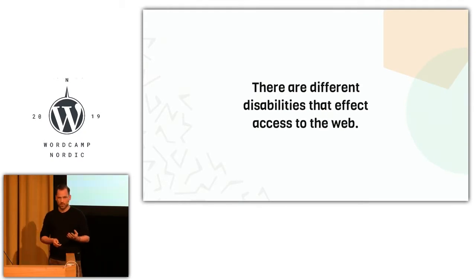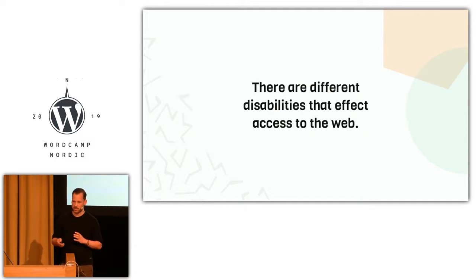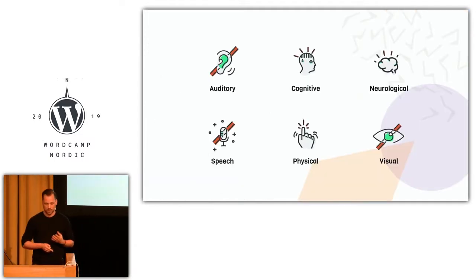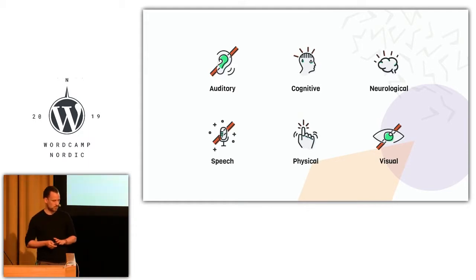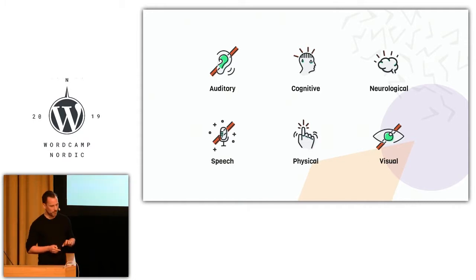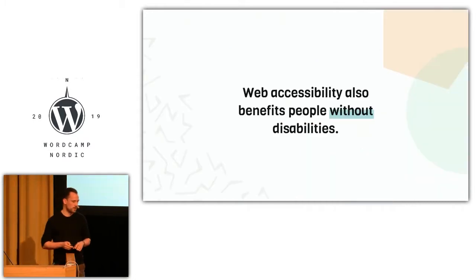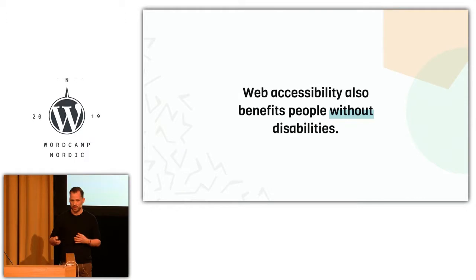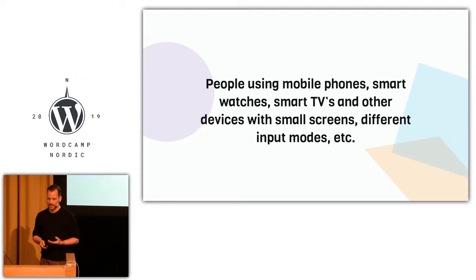It continues to mention different types of disabilities that may prevent access to the web or affect it: disabilities like auditory, cognitive, neurological, speech, physical, or visual, or any combination of those. What's important to note is that we're not just talking about people with these disabilities — it also benefits people without disabilities. Some examples are people using mobile phones or other types of screens and devices.